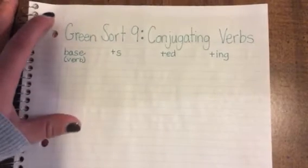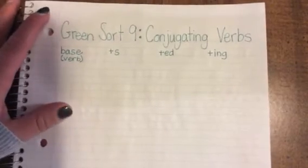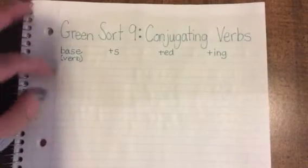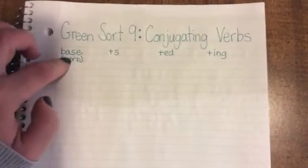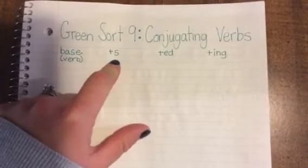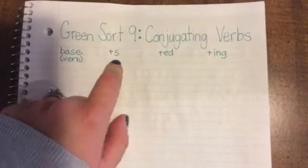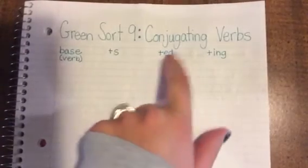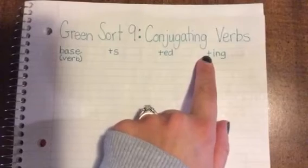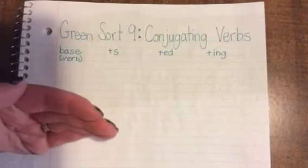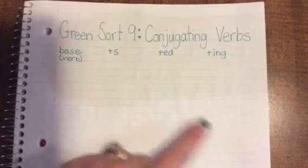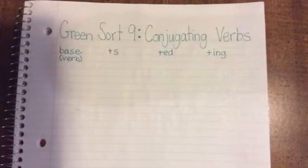For this word sort there are going to be two different sections. We're going to start where we have the base verb and we just add an s, or just add an ed, or just add an ing. The second part is when we have to kind of change the word before we add the s, ed, and ing.